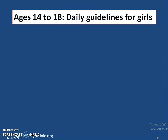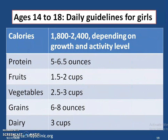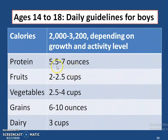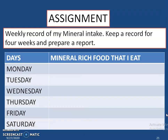Now, if we talk about students of your age group, that is between 14 to 18 — for girls, they should have 5 to 6.5 ounces of protein, 1.5 to 2 cups of fruits, 2.5 to 3 cups of vegetables, 6 to 8 ounces of grains, and 3 cups of dairy every day. For boys in the same age group, they should have 5.5 to 7 ounces of protein, 2 to 2.5 cups of fruits, 2.5 to 4 cups of vegetables, 6 to 10 ounces of grains, and 3 cups of dairy.